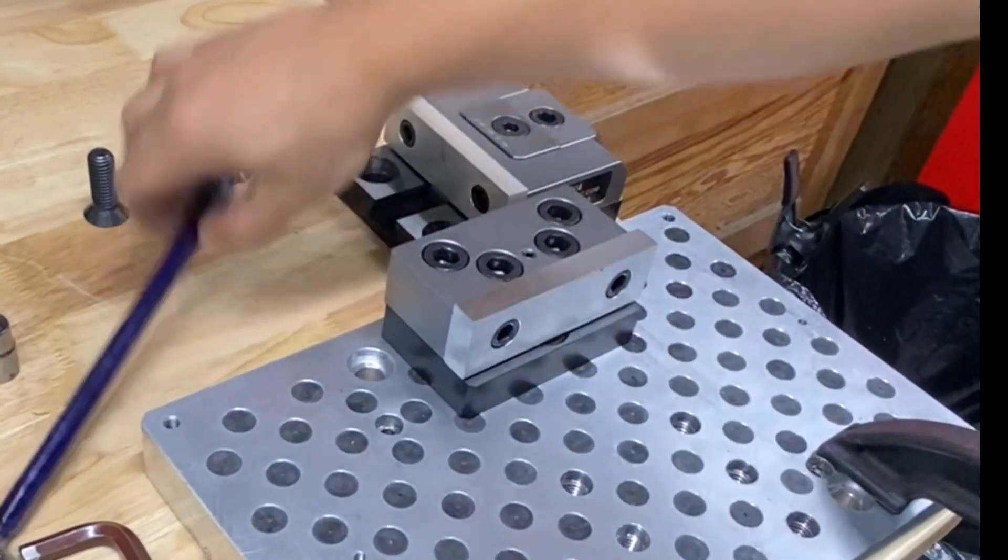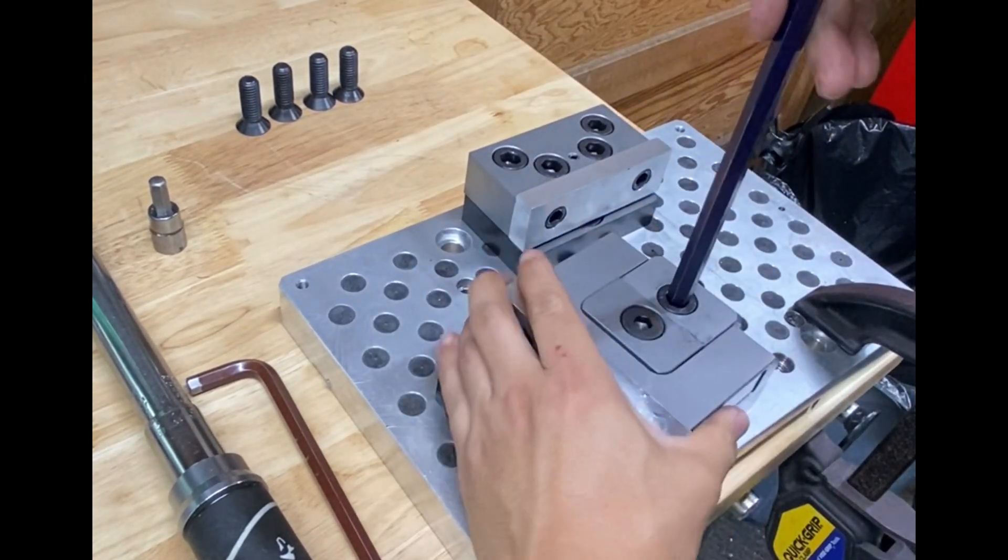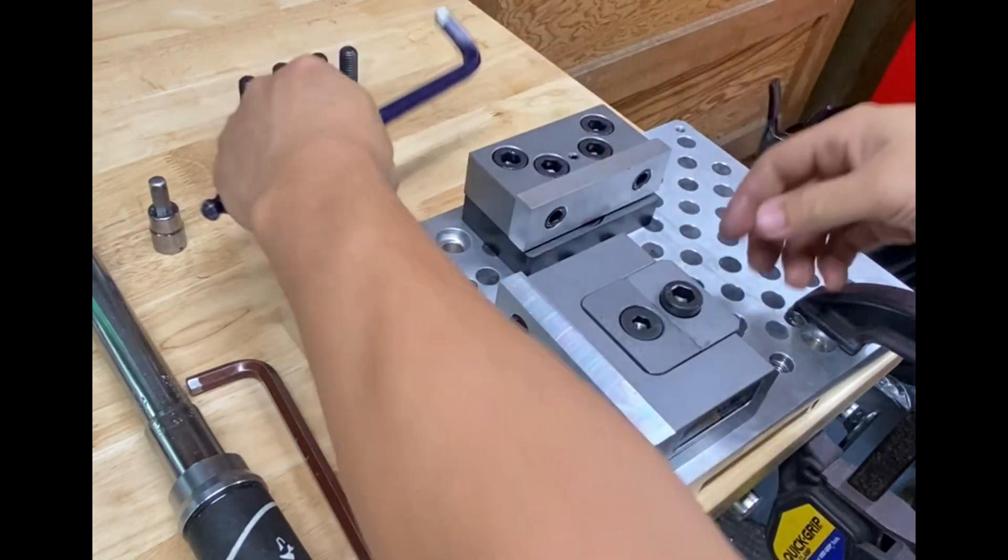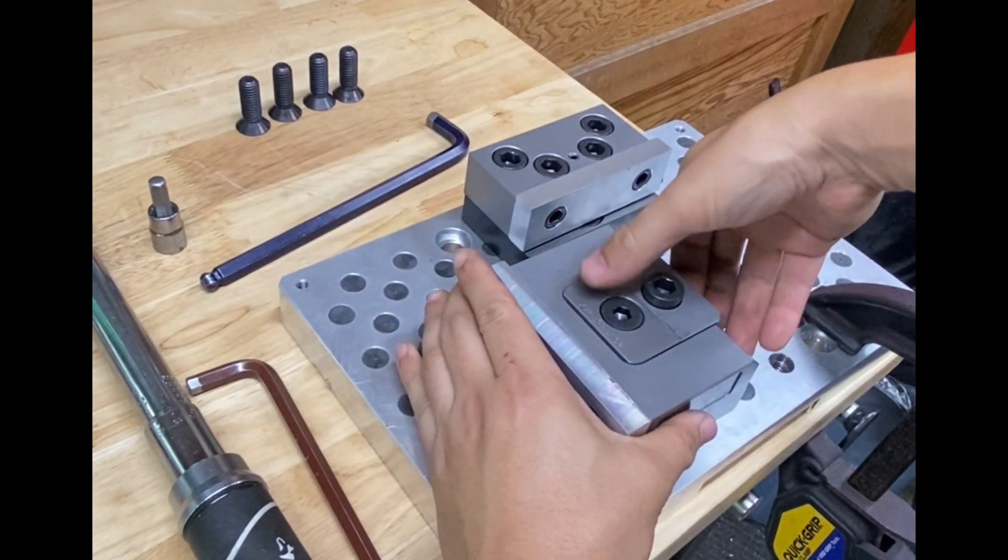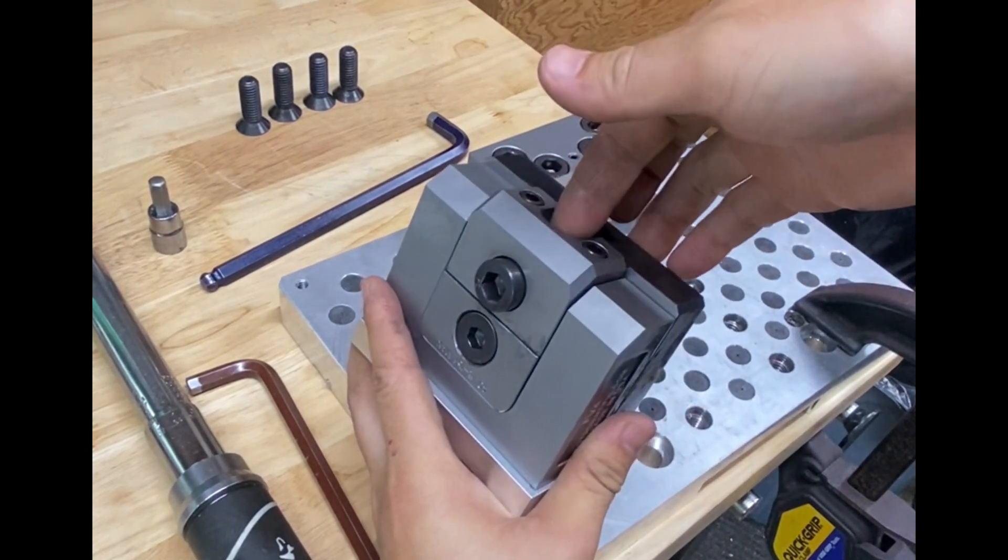Now the next step is to install your moving jaw. Just loosen that up. Sometimes I find it helps if you put your finger in the finger hole or the finger slot.